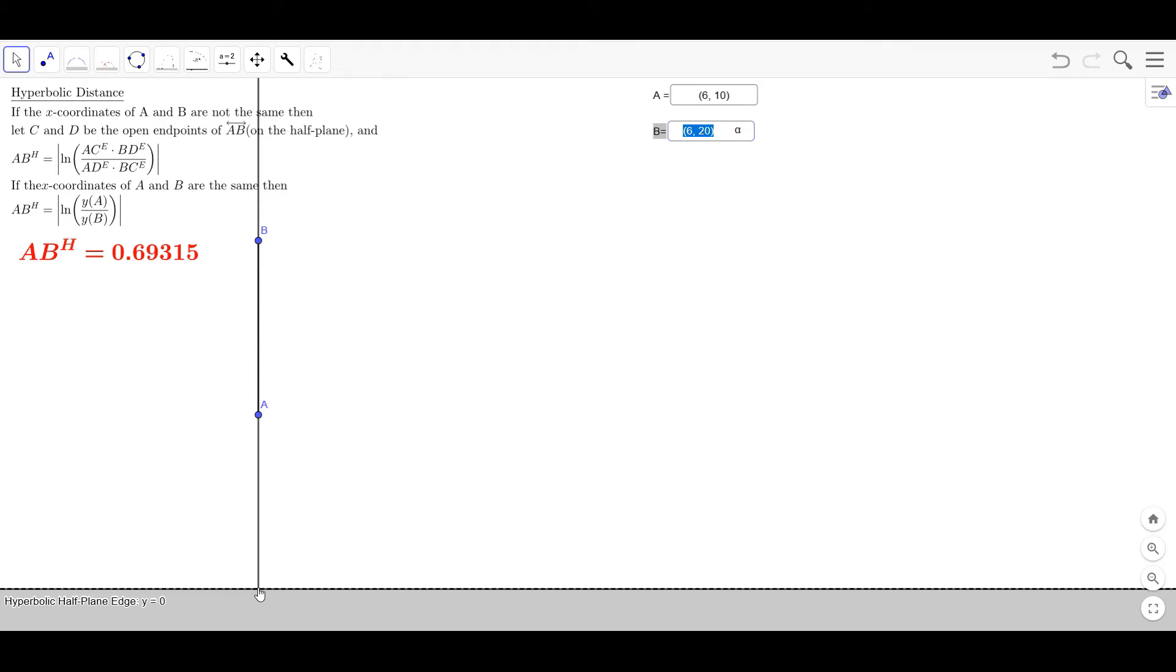But if you did put a point C down here then what you would do is you take the distance from B to C and the distance from A to C, divide those two. Let's say divide AC by BC.